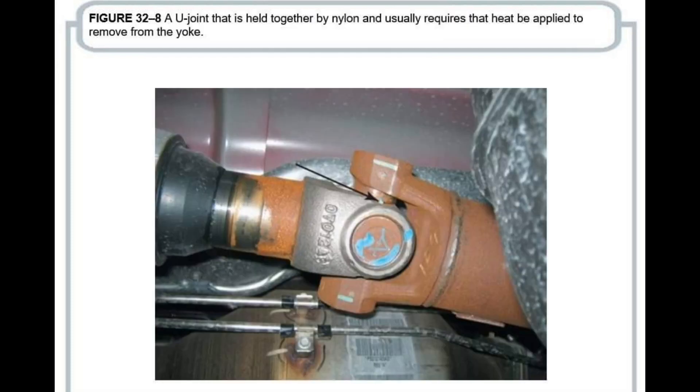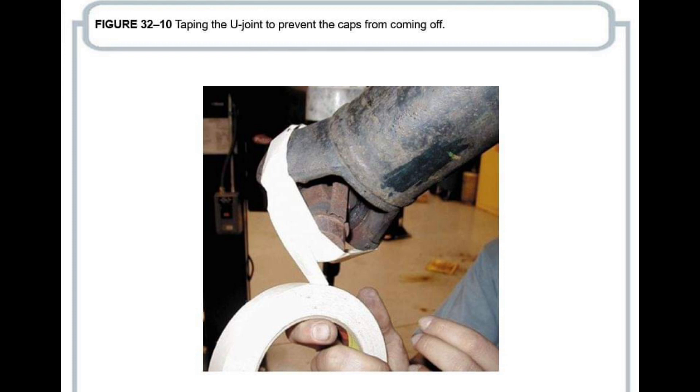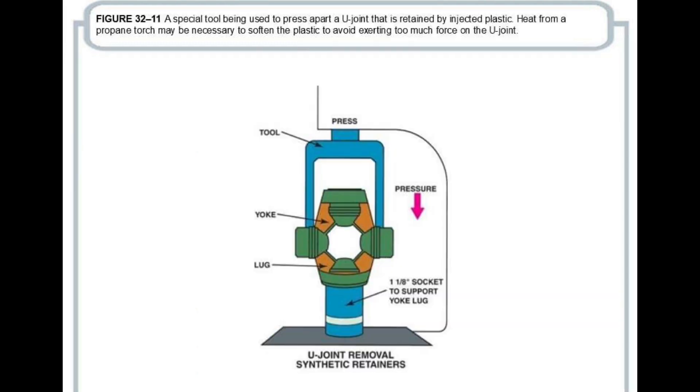Drive shaft: The drive shaft is a cylindrical shaft that transmits torque from the vehicle transmission to the differential, which then sends power to the wheels. It is typically made of steel or aluminum.